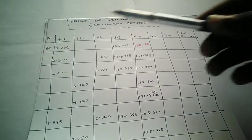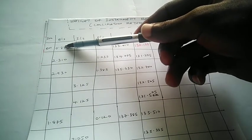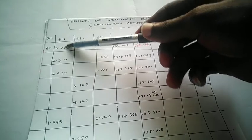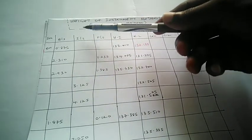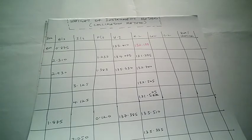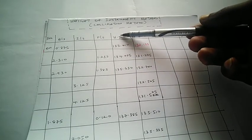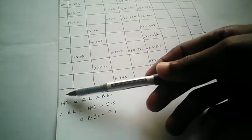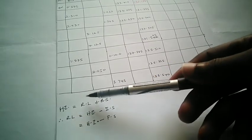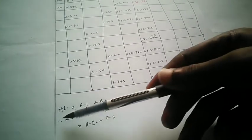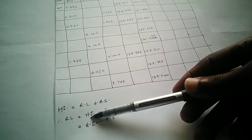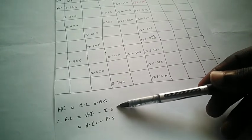Now in this particular case we have the height of instrument column. Looking at the set of formulae: Height of Instrument equals Reduced Level plus Backsight. Therefore, Reduced Level equals Height of Instrument minus Intermediate Sight, or Height of Instrument minus Foresight.